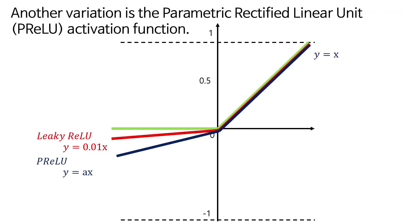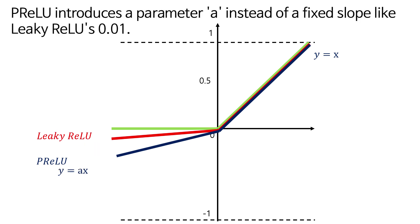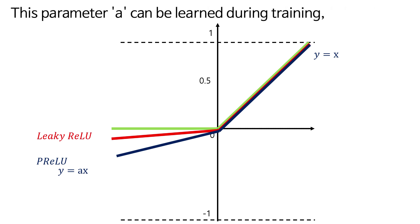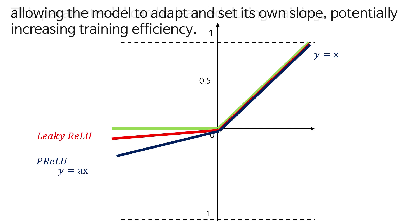Another variation is the parametric rectified linear unit activation function. PURELU introduces a parameter A instead of a fixed slope like leaky RELU's 0.01. This parameter A can be learned during training, allowing the model to adapt and set its own slope, potentially increasing training efficiency.